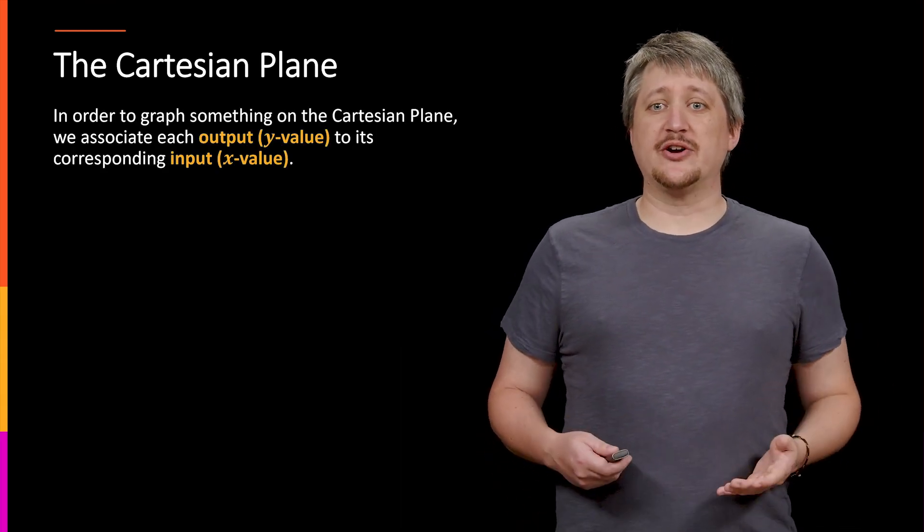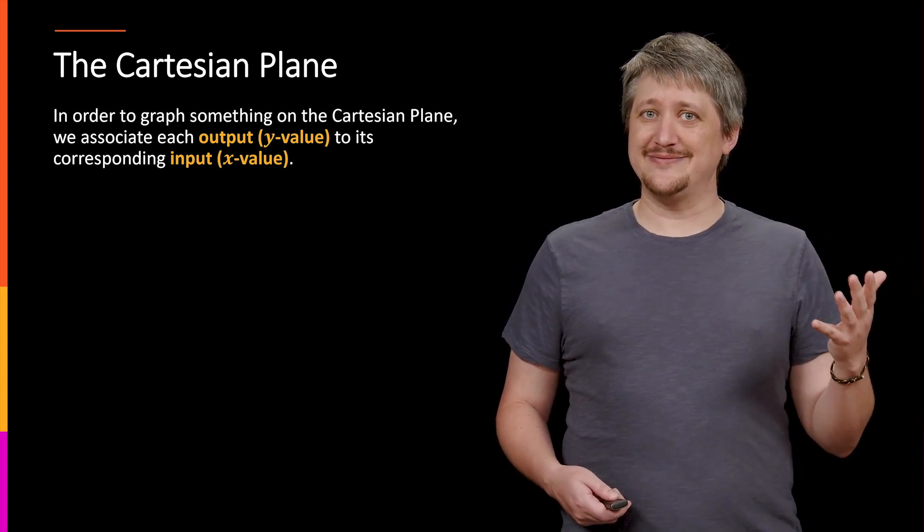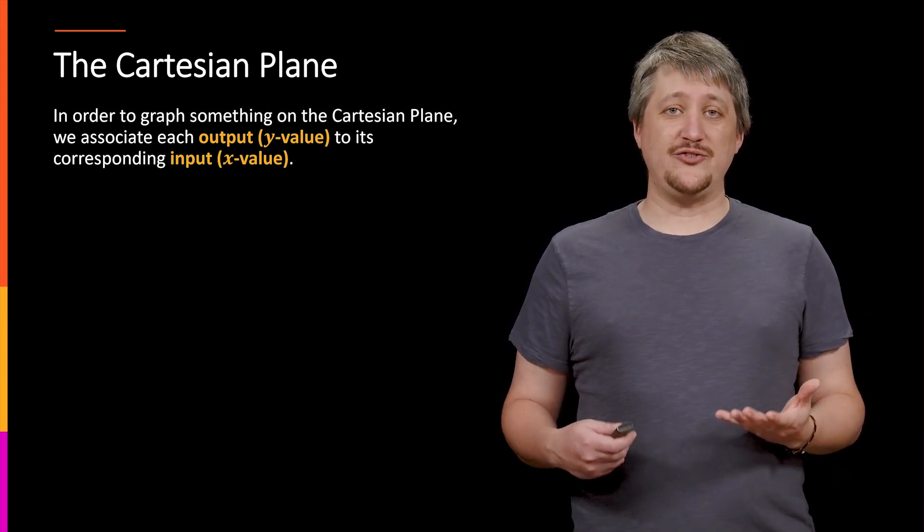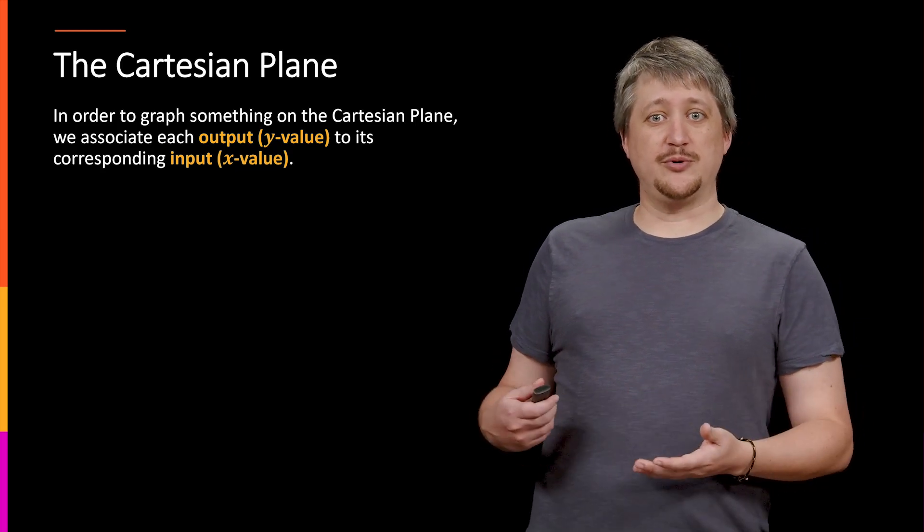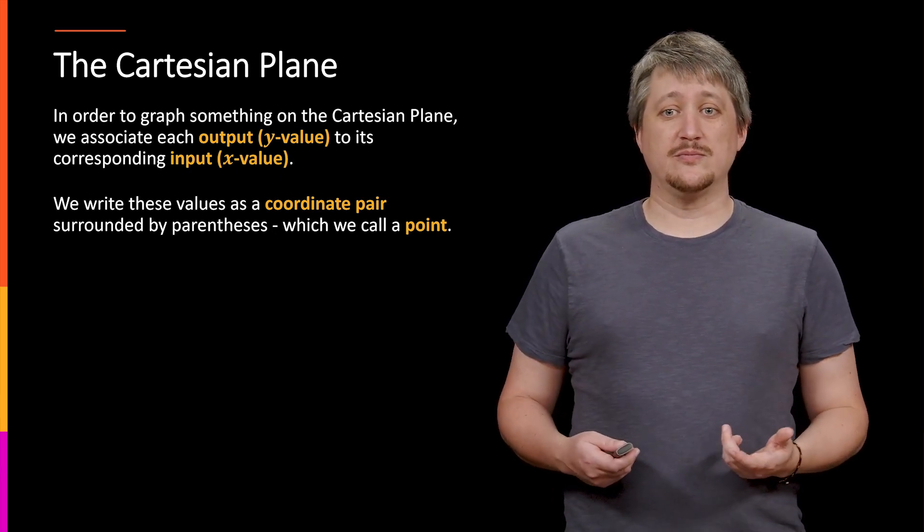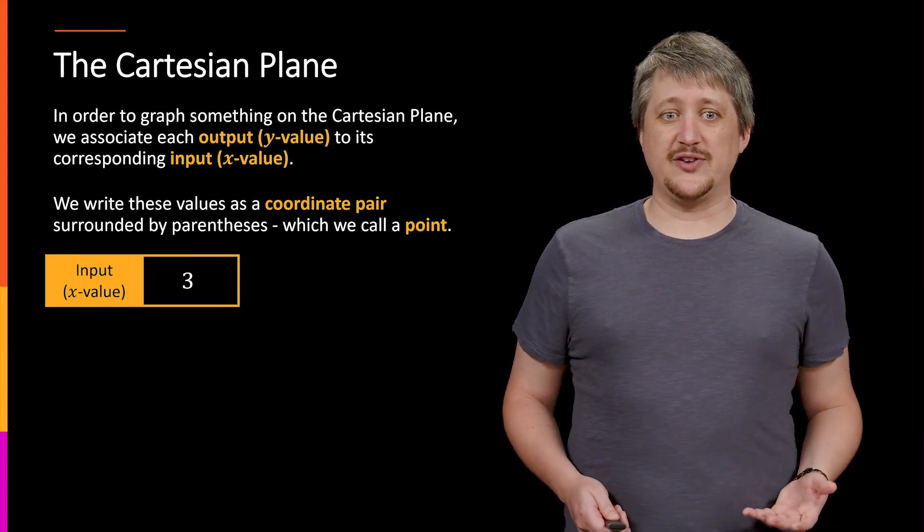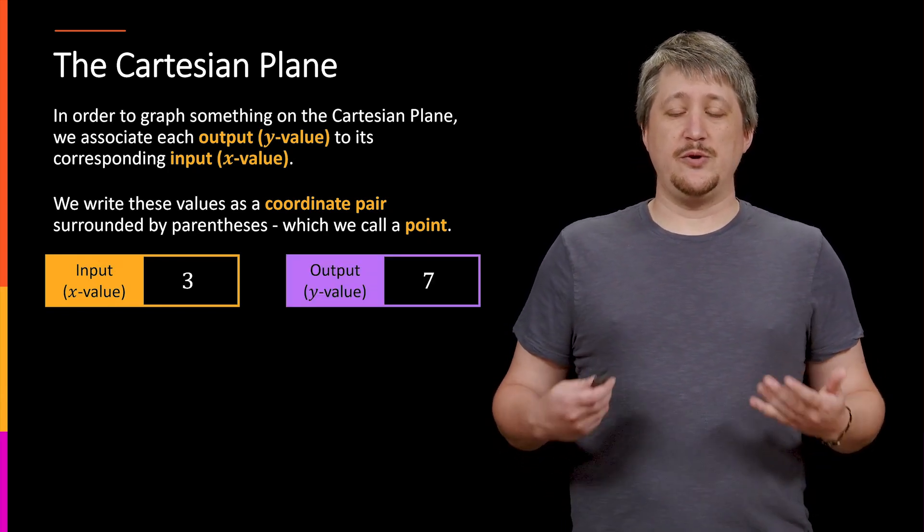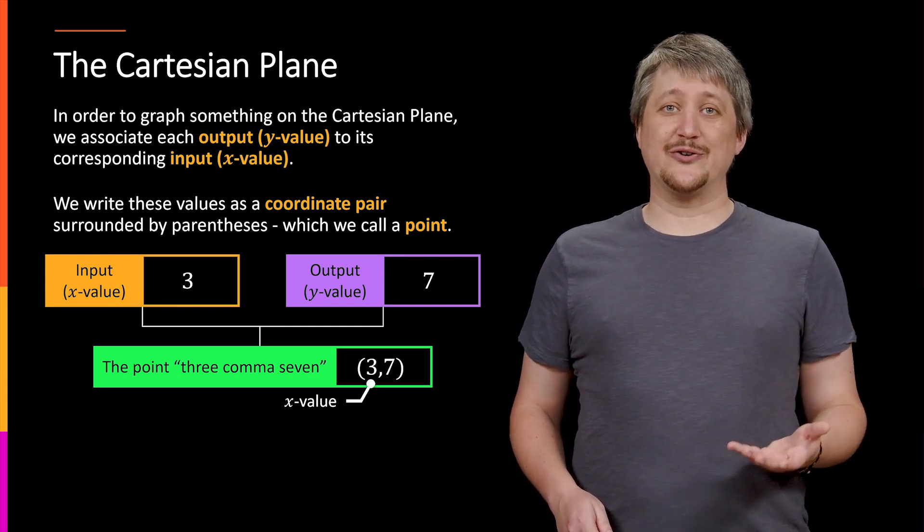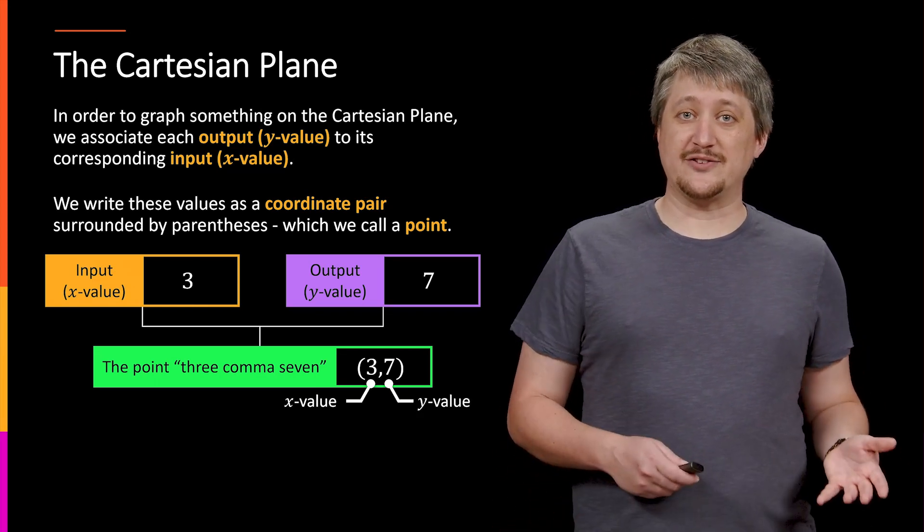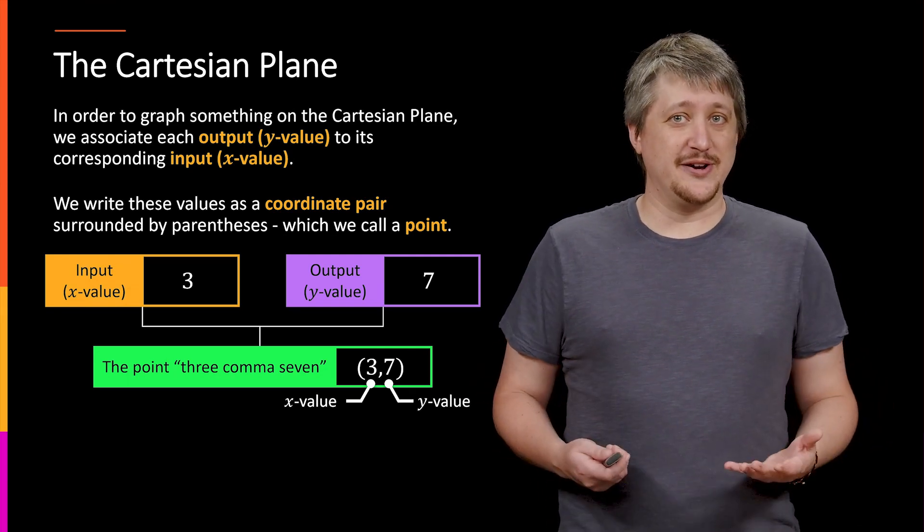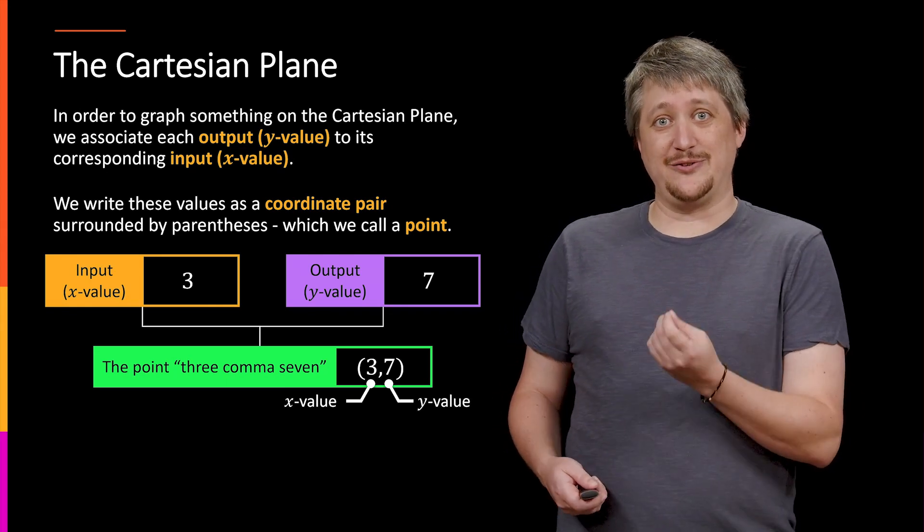So in order to graph something on the Cartesian plane, just like we were thinking about that fly a moment ago, we want to know relative distances from those points of reference. So we associate each output, each Y value to a corresponding input or X value. And those give us those distances. So we write these things as a coordinate pair and we call those things points. So if we have, for example, an input of three and an output of seven, we put these things together and we would call this the point three comma seven. That's how we would say this, where that three is the first value, seven is the second value. Because we have the X value, the input is the first one. The Y value, the output is the second one. And to be clear, order is very important here. The X value goes first, the Y value goes second.